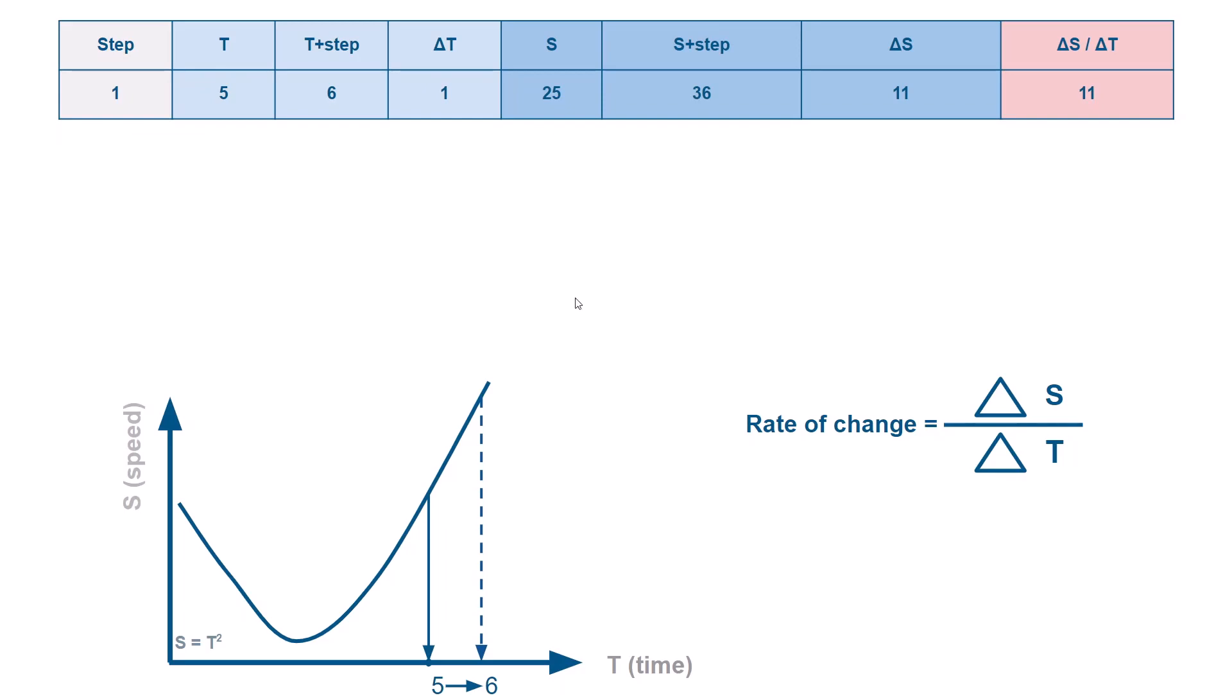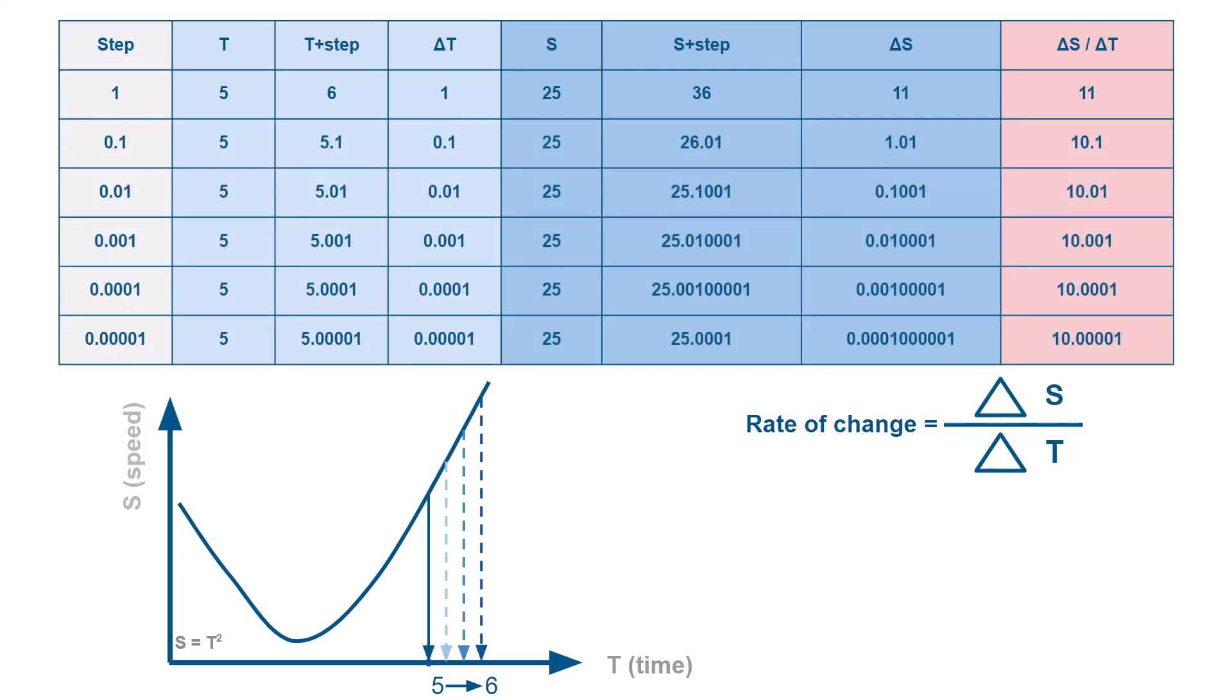If you look at the logical continuation of our graph and of the table, you will notice that we decrease our step, delta T approaches 0 and the rate of change at point 5 aims at 10. So we can say that at point 5 the instantaneous rate of change equals 10.